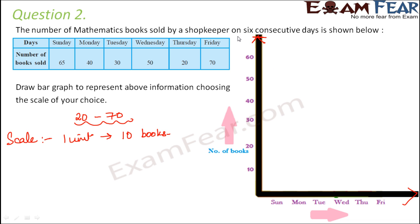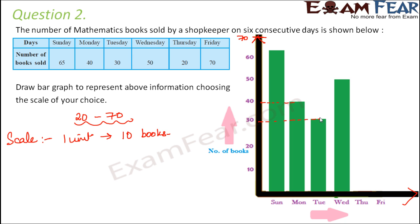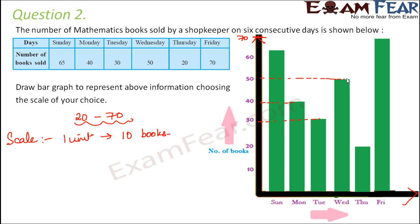Now let's draw the bars. Sunday: 65 books sold — exactly between 60 and 70 on the scale. Monday: bar height is 40. Tuesday: height is 30. Wednesday: height corresponds to 50. Thursday is 20 and Friday is 70. This is how we draw the bar graph for this question.